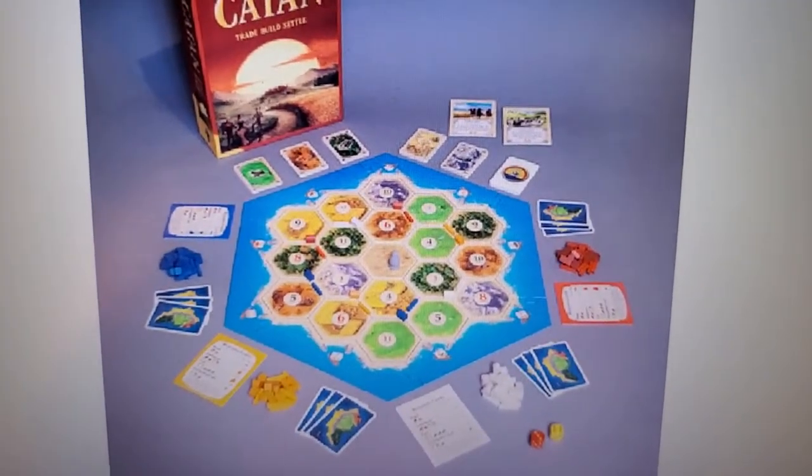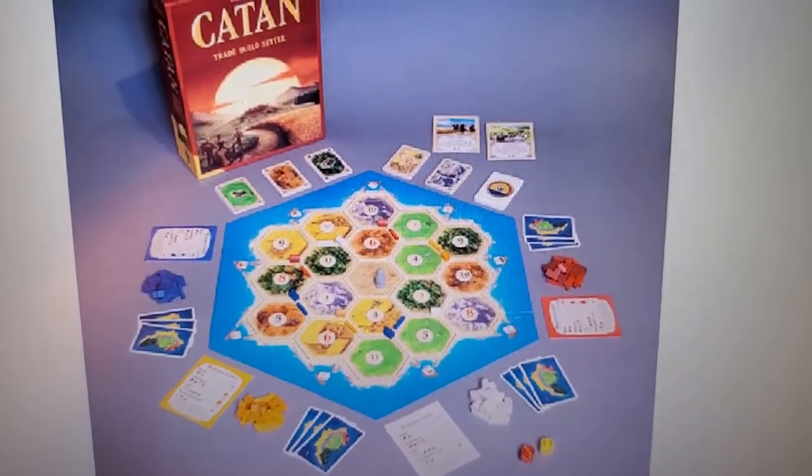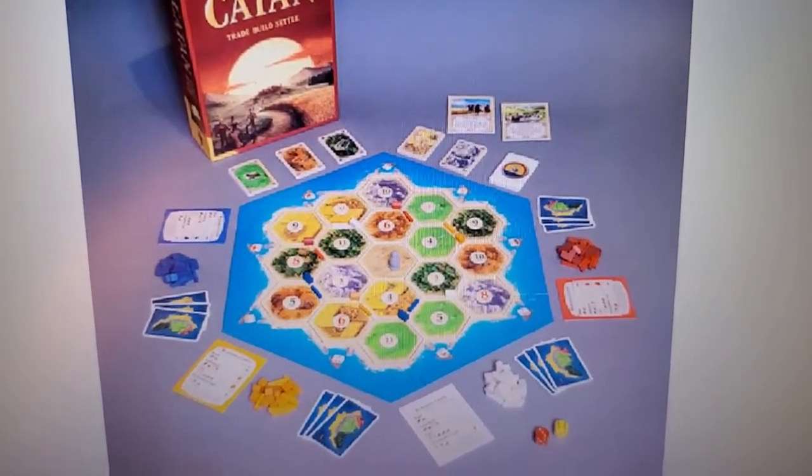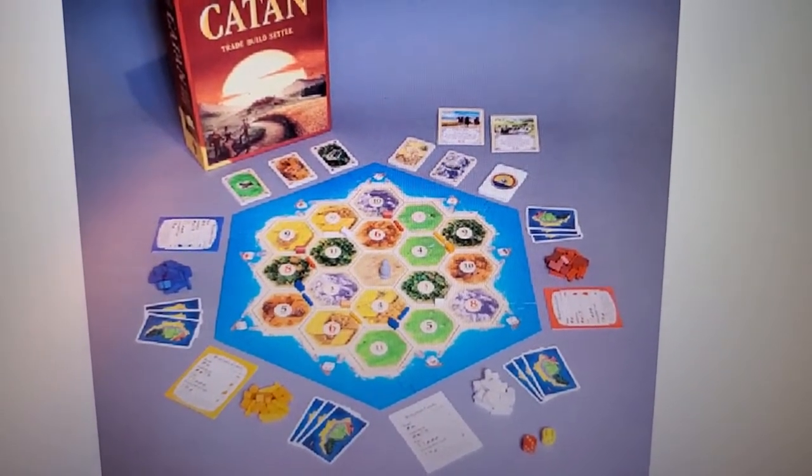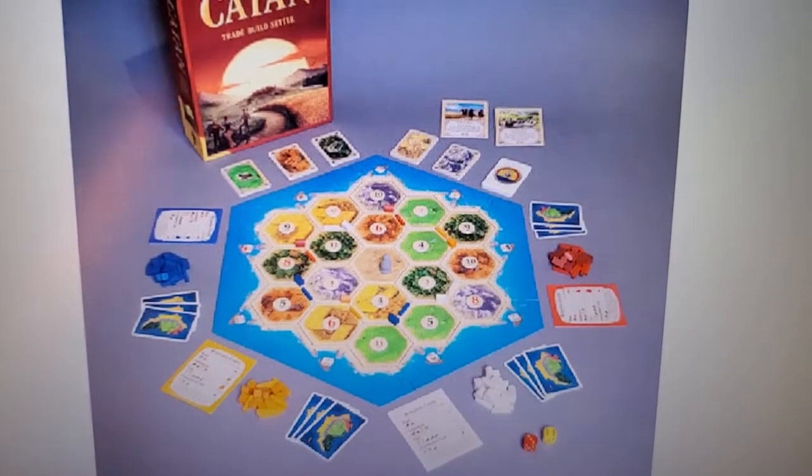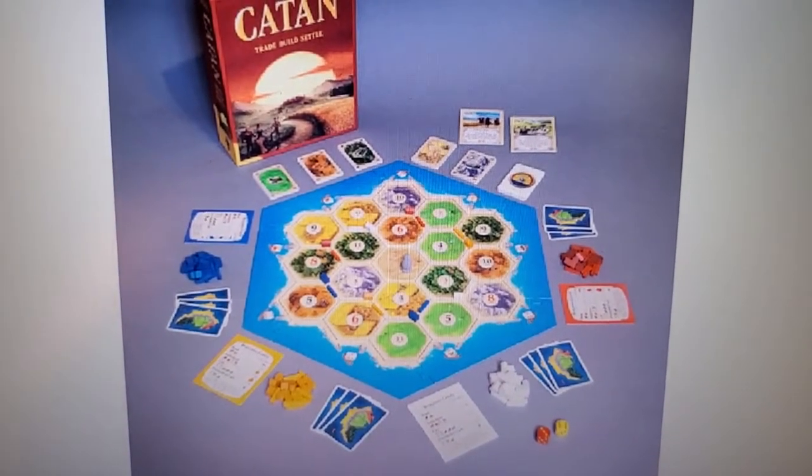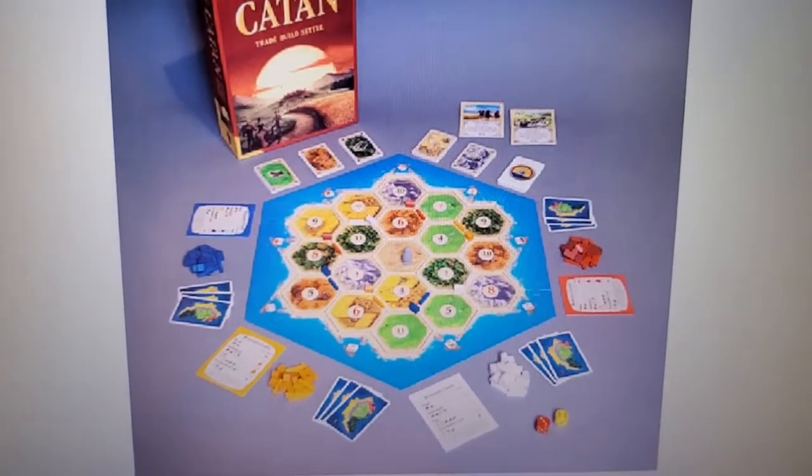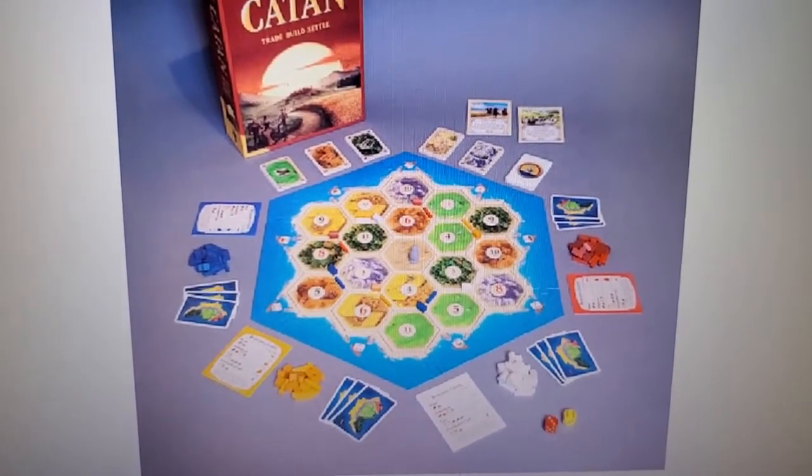How this game works is, in the standard version, up to four people are competing against each other. The story goes that there's people trying to colonize an island or set up settlements on an island called Catan. In the game, you're trying to get victory points, and if you get ten victory points, you win the game.